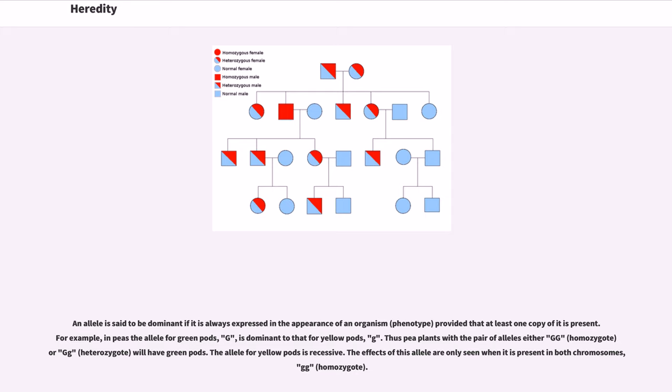For example, in peas the allele for green pods (G) is dominant to that for yellow pods (g). Thus pea plants with a pair of alleles either GG (homozygote) or Gg (heterozygote) will have green pods. The allele for yellow pods is recessive. The effects of this allele are only seen when it is present in both chromosomes, gg (homozygote).